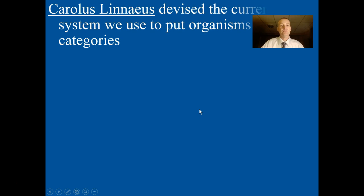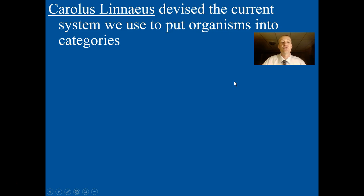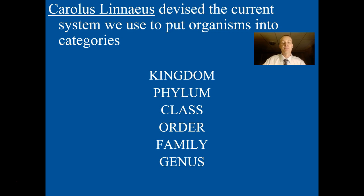Linnaeus, many years ago, was the person who devised our current system that we put organisms into. He devised this classification system where we have kingdoms, phylums, classes, orders, family, genera, and species — kingdom, phylum, class, order, family, genus, and species. Every organism is put into this particular classification system.